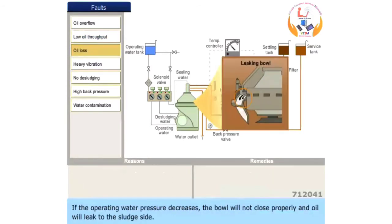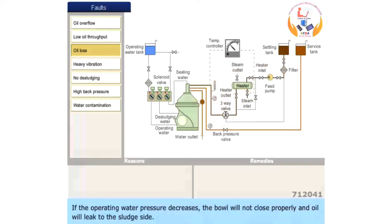If the operating water pressure decreases, the bowl will not close properly and oil will leak to the sludge side. The operating water pressure will reduce if the water line filter is clogged.